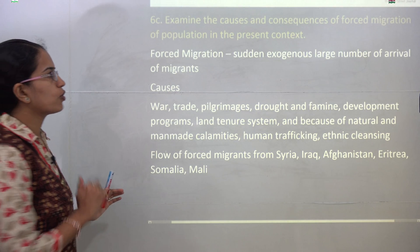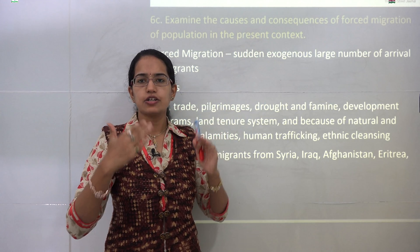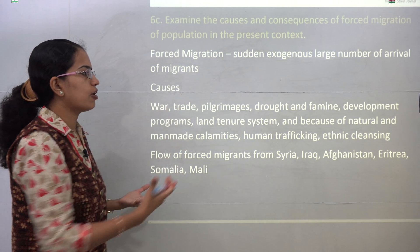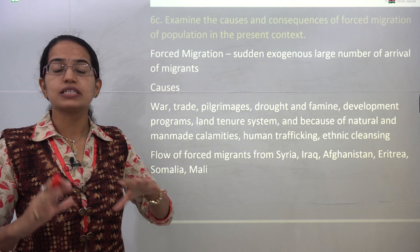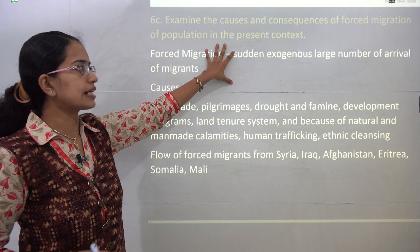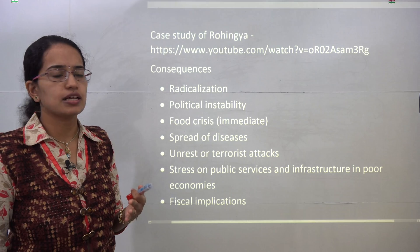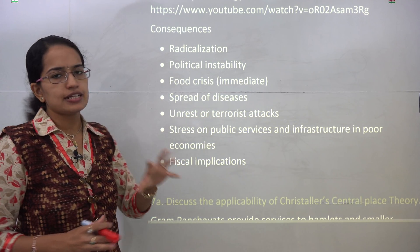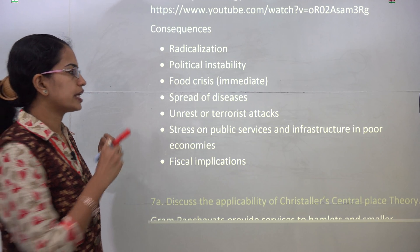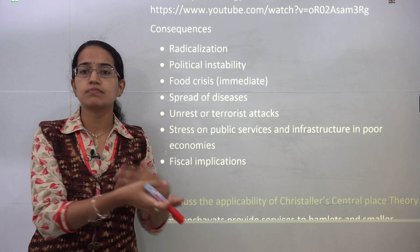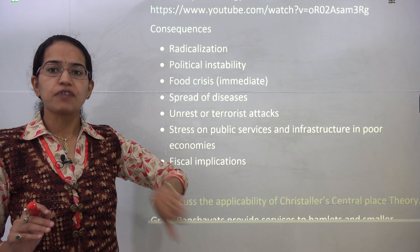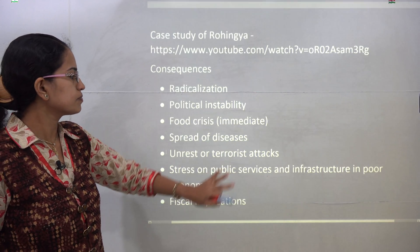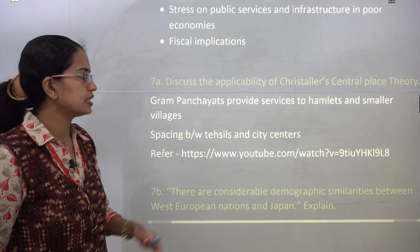The next is the causes and consequences of forced migration of population. This question has been asked keeping in mind the Rohingya crisis. The causes are predominantly war, trade, pilgrimage, famines, developments, natural calamities, natural hazards, and human trafficking. Consequences include instability, fiscal implications, food crisis, radicalization, spread of diseases, terrorist attacks, unrest, and stress on public services. A very recent example is Mount Agung in Bali — evacuating people was a kind of forced migration taking place. The Rohingya case study can be applied here.